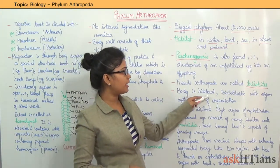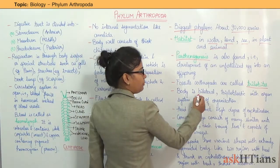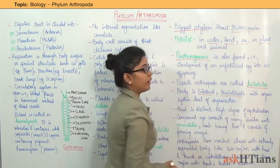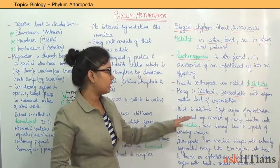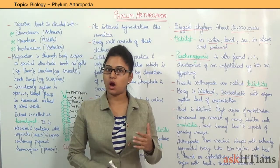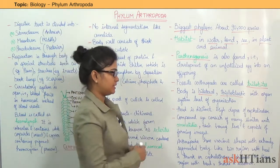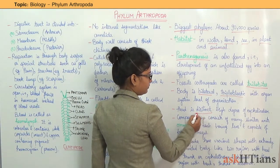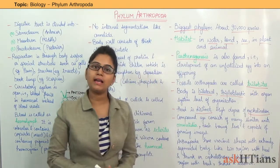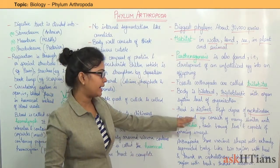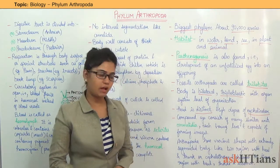The body of Arthropoda is bilateral, triploblastic, and with organ system level of organization. Head is distinct and there is a high degree of cephalization found in Arthropoda.